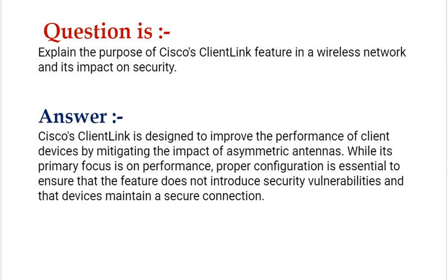Our next interview question is: Explain the purpose of Cisco's ClientLink feature in a wireless network and its impact on security. Your answer should be: Cisco's ClientLink is designed to improve the performance of client devices by mitigating the impact of asymmetric antennas. While its primary focus is on performance, proper configuration is essential to ensure that the feature does not introduce security vulnerabilities and that devices maintain a secure connection.